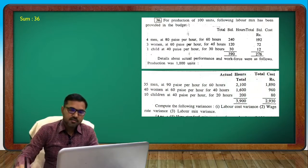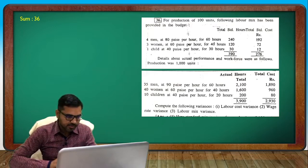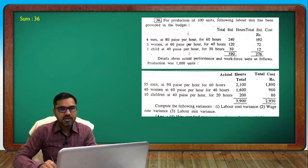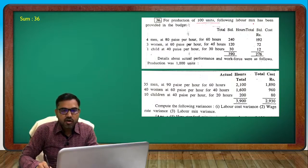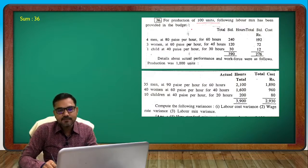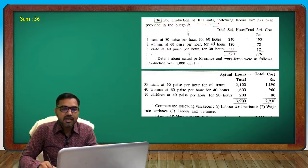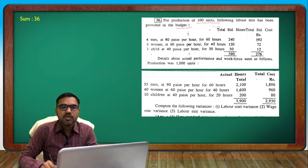Question 36: First question we understood carefully. Here we have a few more details and 2-3 types of workers total. For production of 100 units, the following labor mix has been provided in the budget.